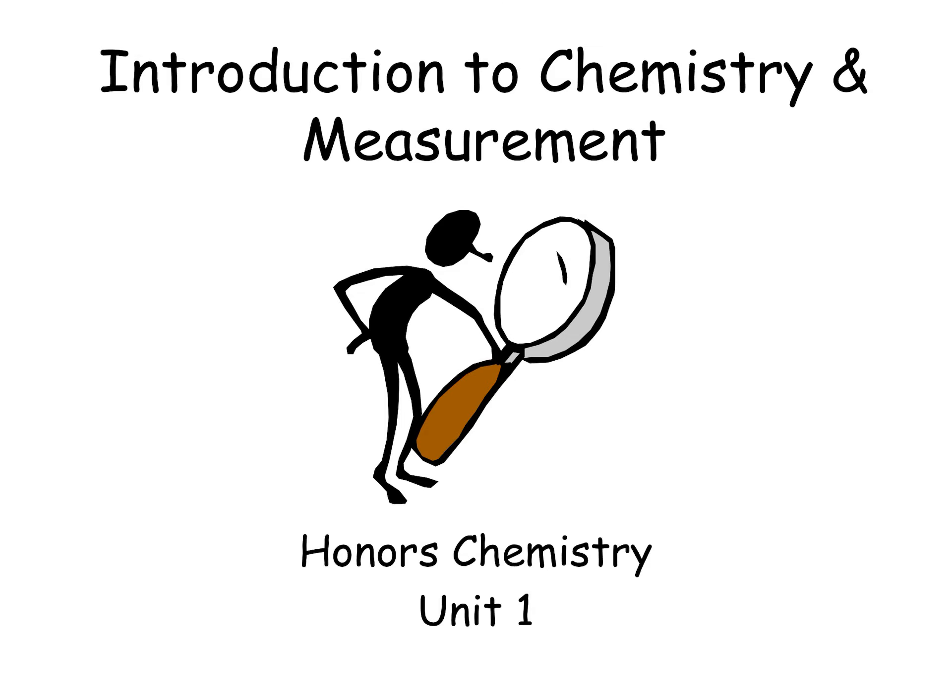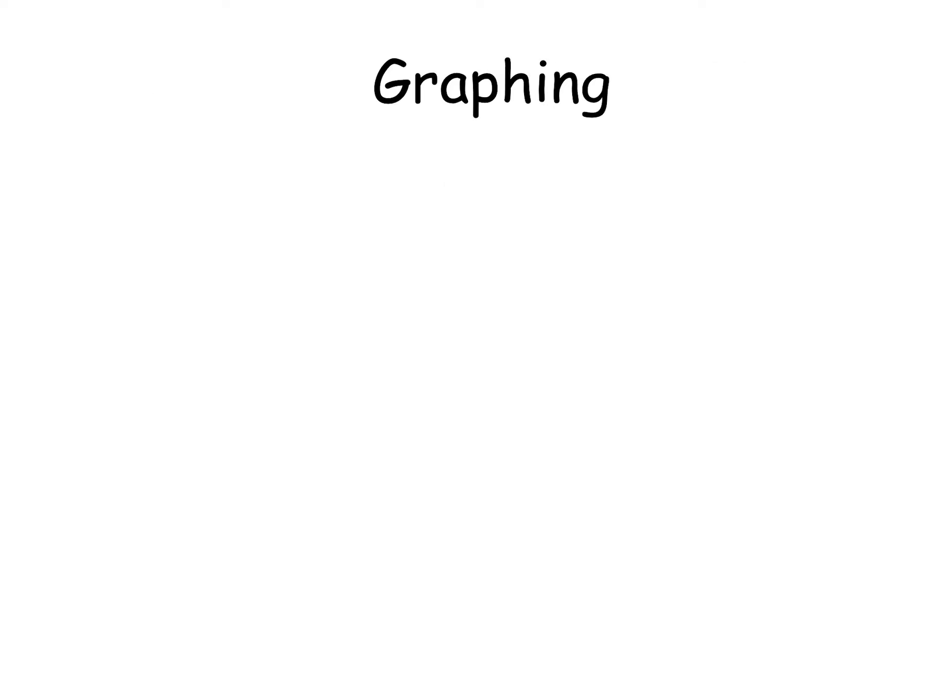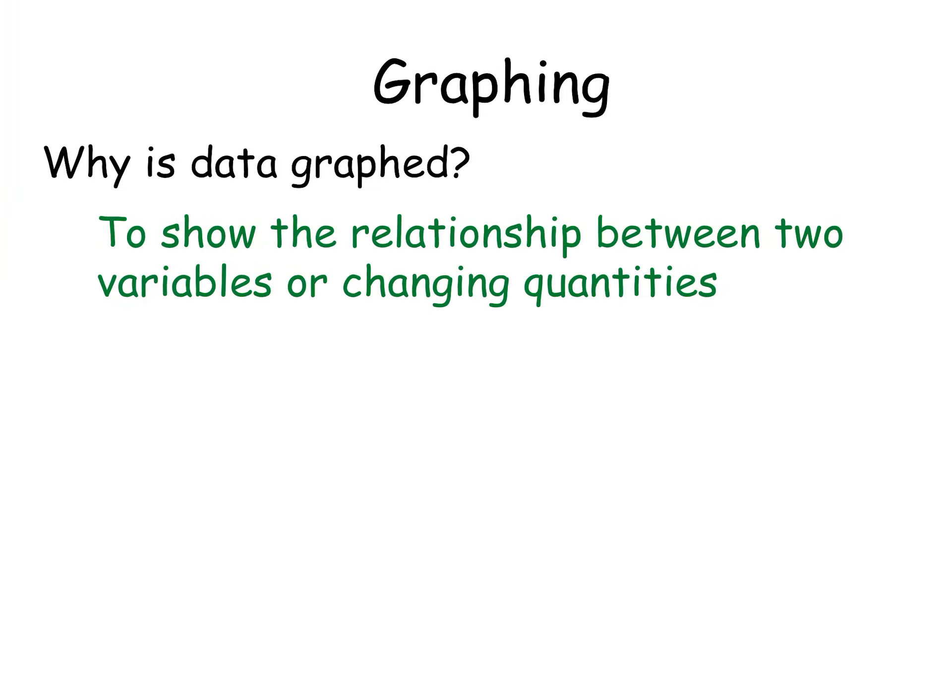Okay, so this is Chapter 1, Introduction to Chemistry and Measurement. The first thing we need to talk about is graphing. Why do we do it? Well, we're showing relationships between two variables or two changing quantities.